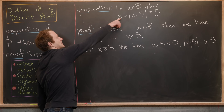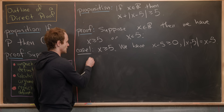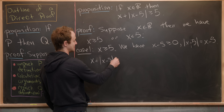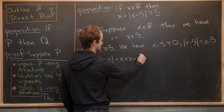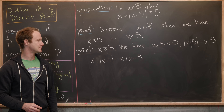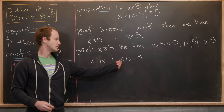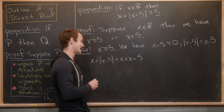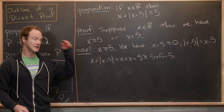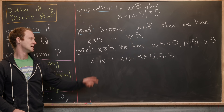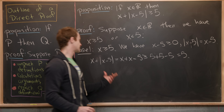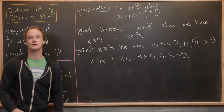Looking at the left-hand side of our goal inequality: x + |x − 5| = x + (x − 5) since we dropped the absolute value. We know x ≥ 5, so x + x ≥ 10. Using x ≥ 5, we get x + x − 5 ≥ 5 + 5 − 5 = 5. So our expression is ≥ 5, just as we wanted.